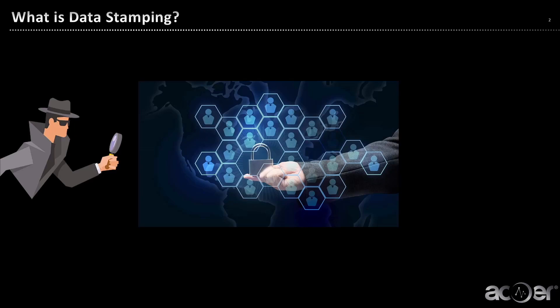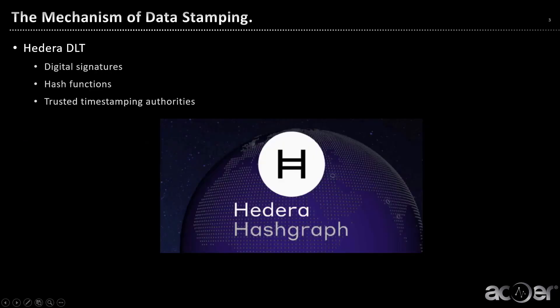So, what exactly is data stamping, and why is it so essential in our digital age? Data stamping, in simple terms, is like putting a seal on your data, ensuring it hasn't been tampered with. Today, we'll dive into what data stamping is, why it is essential, and the technology behind it. It's time to dive into the mechanics of data stamping, where technology meets trust.